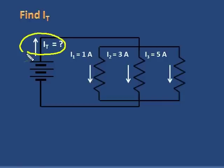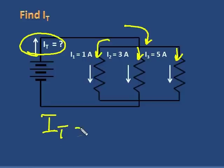We need to find IT, and this is quite easy. This is an example of Kirchhoff's current law. We know that whatever is in each of those branches is what IT will equal. So we can look at it, just add it up in our head. We don't need a calculator.